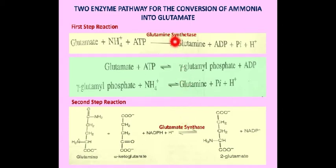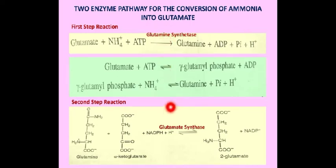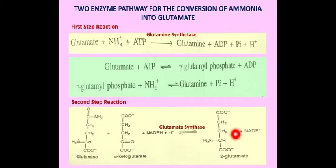The first enzyme is glutamine synthetase and the second is glutamate synthase. Glutamine synthetase has very high affinity for ammonia, so it converts glutamate to glutamine, and in the second step glutamine is converted back to glutamate. To maintain a constant supply of amino groups, the glutamine synthetase reaction has been selected, although it is expensive as one molecule of ATP is utilized.